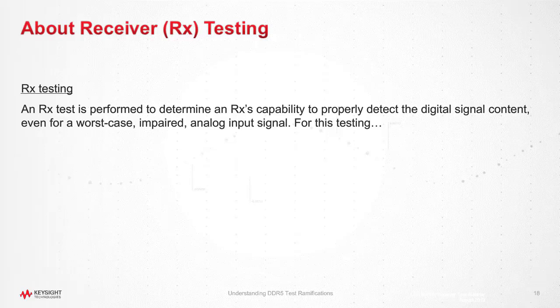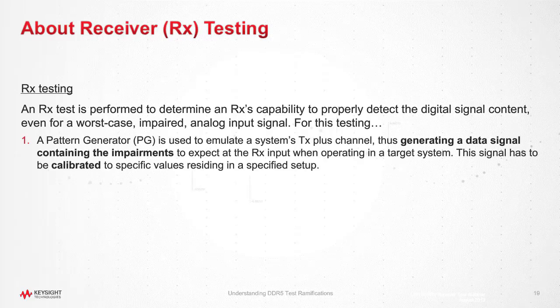Receiver testing involves three steps. In the first step, typically a pattern generator is used to generate this worst case signal as described before. Since there are tolerances in the test setup and also in the accuracy of the generator, it is required that the stimulus is calibrated so that it contains the correct level of different impairments that are typically defined in the appropriate standard.